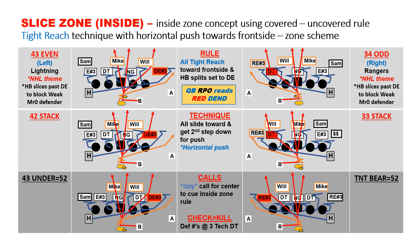A variation to our inside zone is a slice zone. It's exactly the same as split zone, except the H-back will now leave the defensive end on the backside, wrapping or slicing around to block the Willbacker inside, with Mr. Zero to the outside. We still use our tight reach technique and the Izzy call. The signal will tell the H-back to slice, and the quarterback now reads the defensive end, making this a triple option type concept.